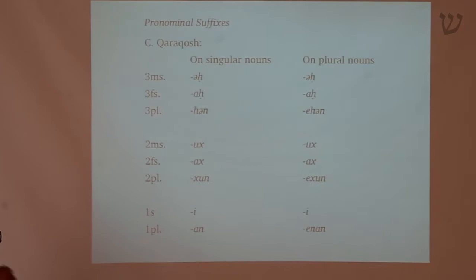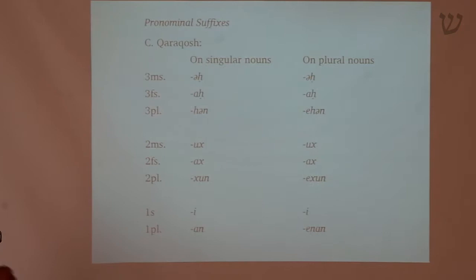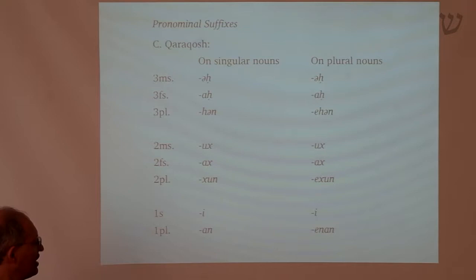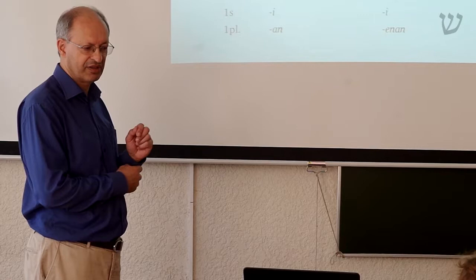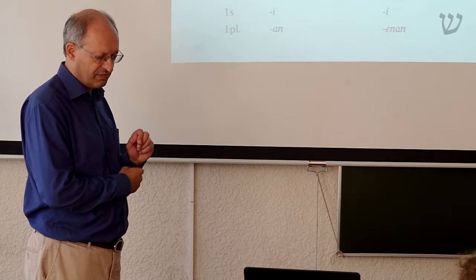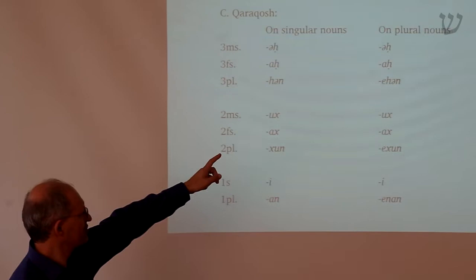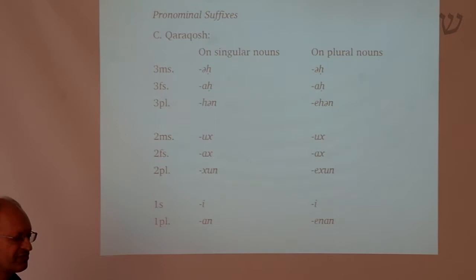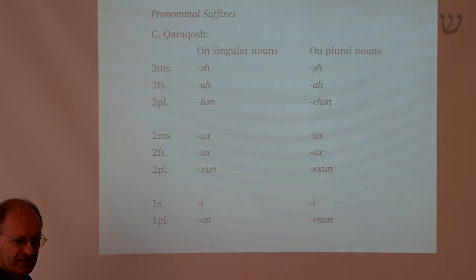Now let's look at pronominal suffixes — suffixes added to nouns to express a genitive relationship, like 'my house', 'your house', 'his house'. In earlier Aramaic, and in classical Semitic languages like Hebrew or Arabic, if you add a suffix to a singular noun or a plural noun, you typically have a different form. In Hebrew, you say 'beti' for 'my house' but 'bata'i' for 'my houses', or 'susi' for 'my horse' and 'susai' for 'my horses'.